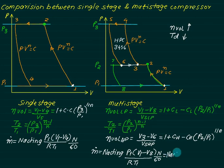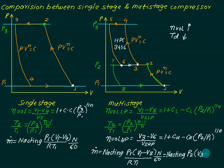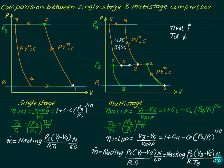The same mass flows through the HP compressor. For the HP cylinder, suction occurs at point two, so: ṁ = n_acting × P2 × (V3 − V6) / (R × T3) × (N/60), where T3 is the suction temperature for the HP compressor.